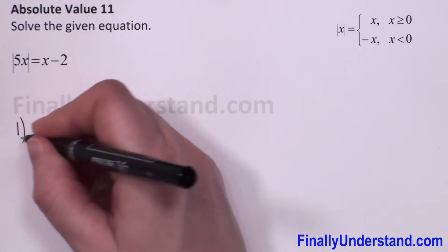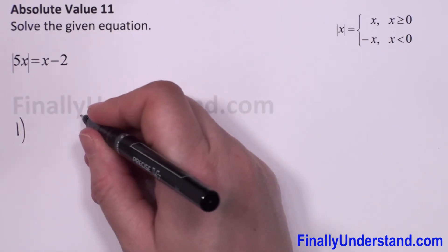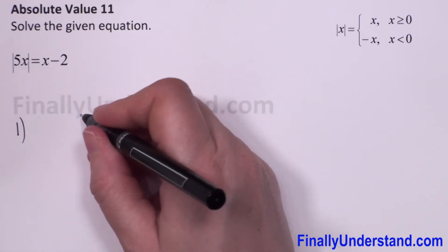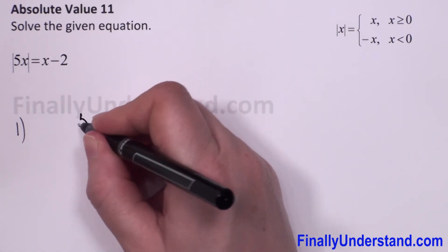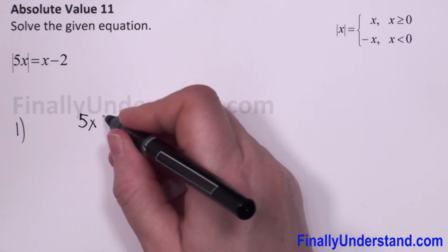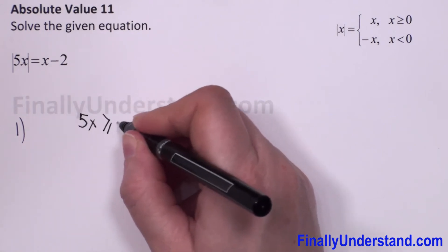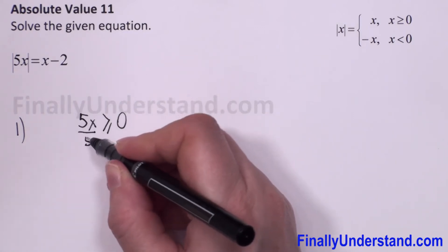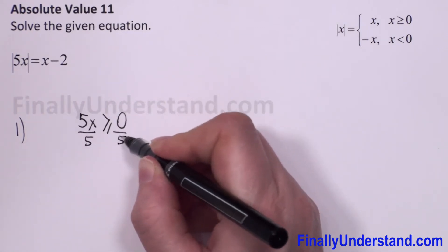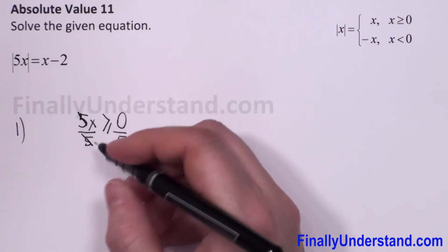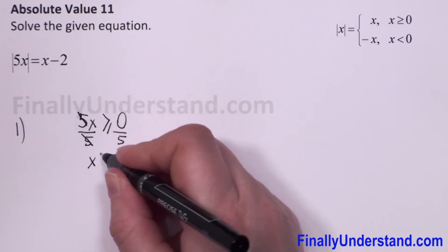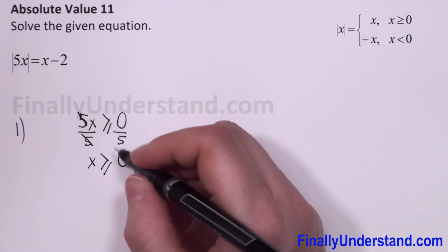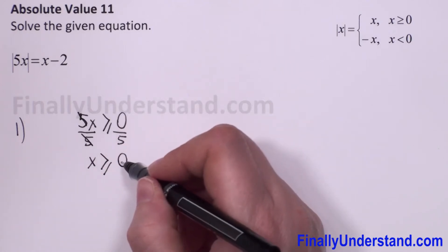So let me put the first case. We have the absolute value of 5 times x. It means we have to solve the inequality 5x is greater than or equal to 0. I will divide both sides by 5. 5 and 5 will cancel, and we have x is greater than or equal to 0. We have the domain for the first case.